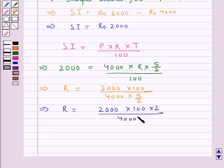Now solving this, we get 2000 × 100 / (4000 × 5/2). Simplifying the calculation, this equals 20. Thus we get R = 20% per annum.